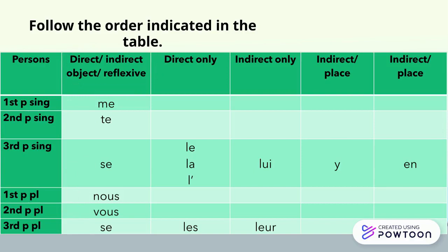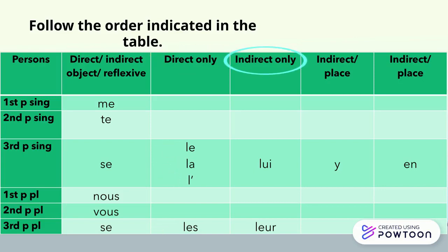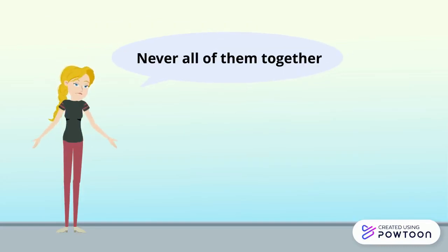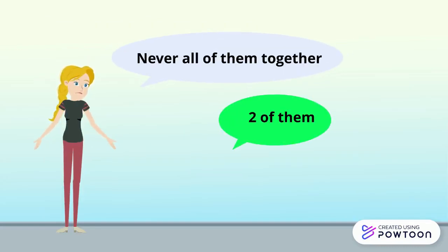And then you have the pronouns that can only be direct: le, la, l', les. Then those that are only indirect: lui, leur. And then you have y. And then you have en. You will never have all of them together — you will usually have two of them.